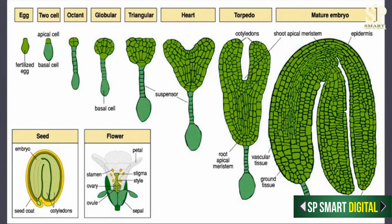The topmost cell of the suspensor swells up and after swelling up it is called the haustorium. The haustorium is the first cell of the suspensor. The last cell of the suspensor — the cell which is adjacent to the embryo cell — is called the hypophysis. This hypophysis will later on form the radicle and the root cap. The radicle further goes on to form the root.